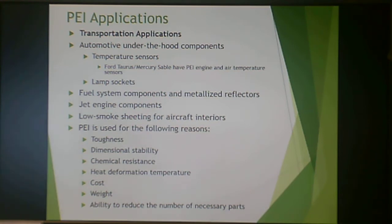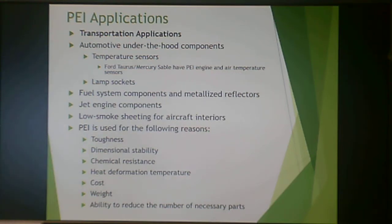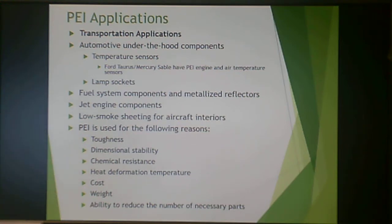Polyetherimide is used widely for transportation applications: under-the-hood components, temperature sensors, and lamp sockets. The Ford Taurus uses a polyetherimide engine air temperature sensor. It's also used for fuel system components, engine components, and low-smoke sheeting for aircraft interiors — because it is tough, dimensionally stable, chemical resistant, has a high heat deformation temperature, has better cost than comparable metals or more expensive thermoplastics, reduces weight significantly, and can create one part where before you needed three or four metal parts attached to one another.